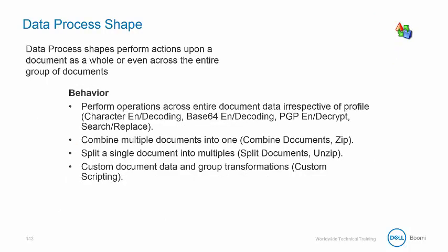The data process shape performs actions upon a document as a whole or even across the entire group of documents. You can combine multiple documents into one, split a single document into multiple documents, and perform custom document data and group transformations with custom scripting.